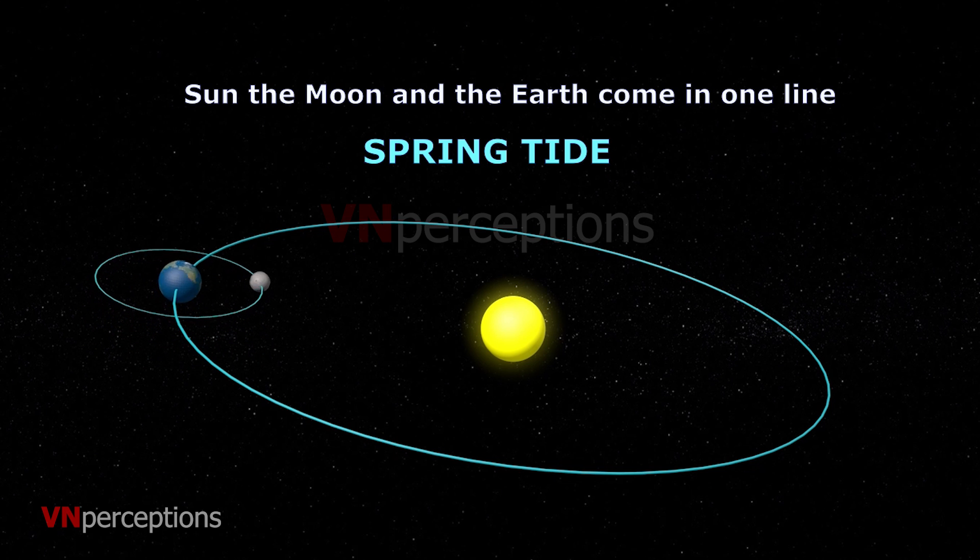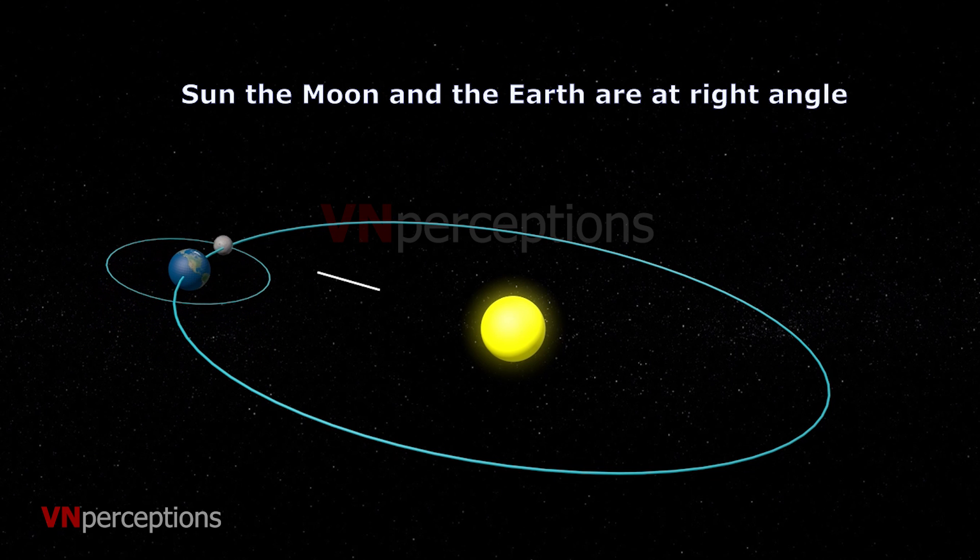Similarly, when the sun, moon and earth are at a right angle, the position is referred to as position of quadrature. At such times, the tide is 20% lower than the normal tide, and it is referred to as neap tide.